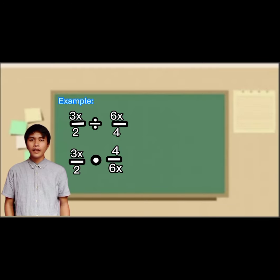Since 3x and 6x have a common factor of 3x, then we cancel 3x and 6x divided by 3x will become 2.